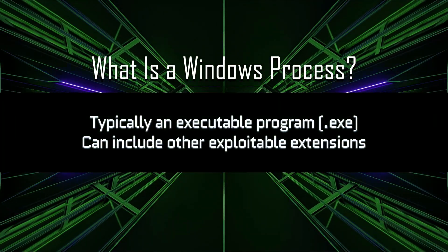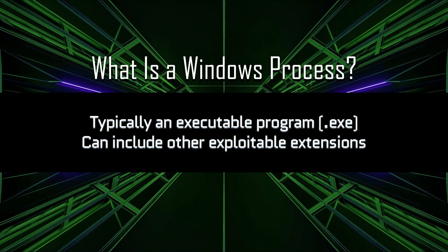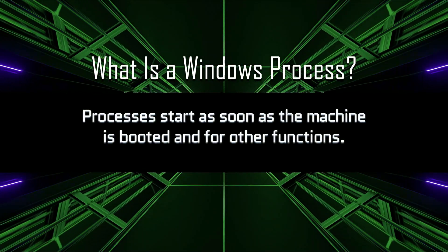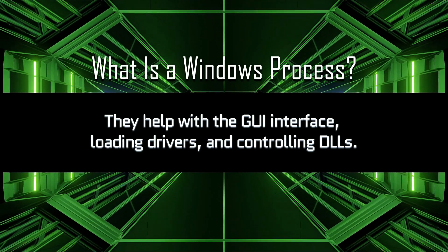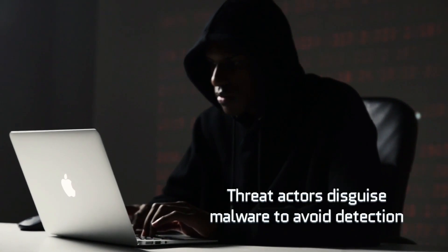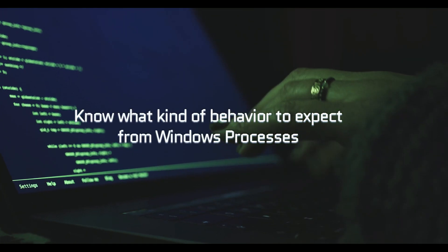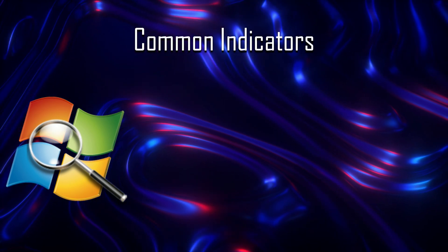Along with going over a few of the most common processes, we'll learn more about how to identify the signs of whether what you see is actually a threat actor masquerading as a legitimate Windows process. So let's define a Windows process. A Windows process is typically an executable program or EXE, but they can include other exploitable extensions. The Windows operating system uses many processes that pop up when the machine is booted and for other functions. Some of these help with initialization and creating the user GUI interface, loading drivers, and controlling the DLL or dynamic link library behavior. Threat actors like to disguise malware as legitimate Windows processes to avoid detection. Having a solid understanding of the main Windows processes and what's to be expected of their behavior is important to be a good threat hunter and security analyst. First, we'll go over the common indicators and things you should look for when assessing the processes on a Windows machine.